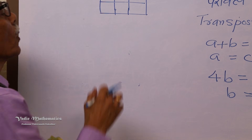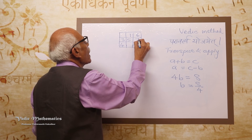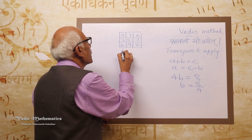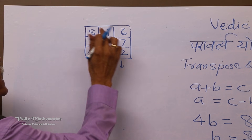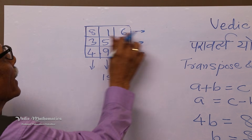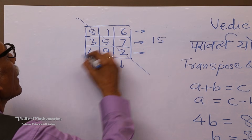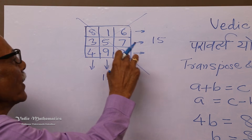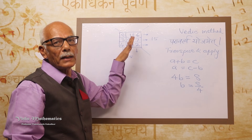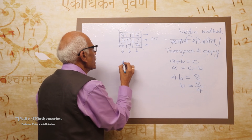Let me write the answer for 1 to 9. If you observe the vertical sum: 7 and 8, 9 and 6 — it is 15. Diagonally, 8, 5, 2 or 4, 5, 6 — it is also 15. So the sum vertically, horizontally, and diagonally is 15.